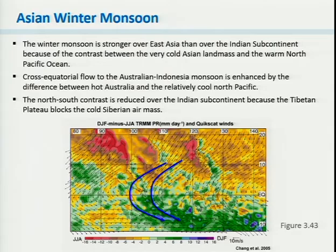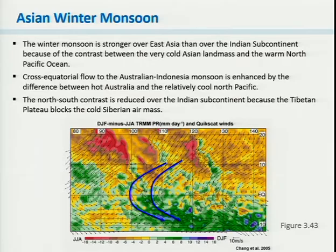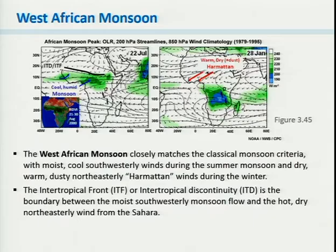The Asian winter monsoon is also quite important, particularly over East Asia. We have a very strong contrast between the cold Asian land mass and the warm North Pacific Ocean, driving a strong offshore circulation — a cross-equatorial flow that comes into the Australian and Indonesian monsoon, partially driven by the relatively warm land over Australia but also pushed by the temperature gradient from the outflow from the Asian continent. Over the Indian monsoon region it's less significant because the Tibetan plateau blocks the cold Siberian air mass, so it's more the East Asian monsoon that's important for the winter monsoon circulation.